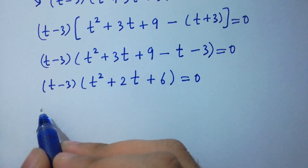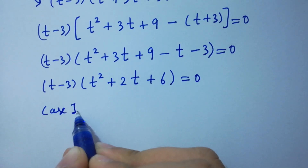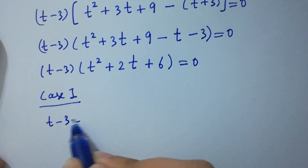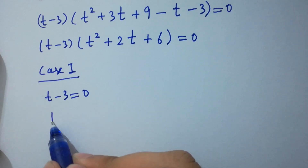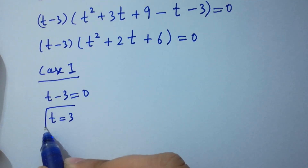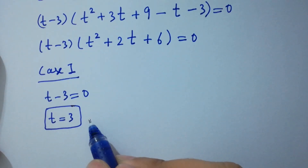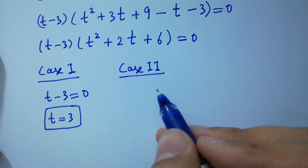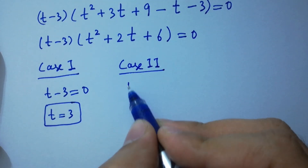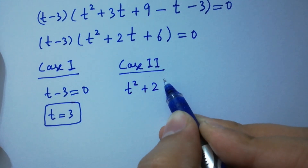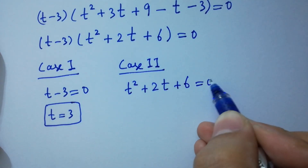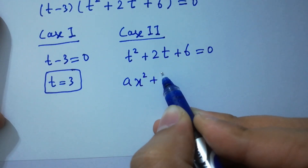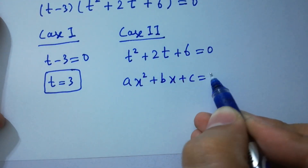Either in case one: t minus 3 equal to 0, where we get t equal to 3 — the real solution. In the second case, t squared plus 2t plus 6 equal to 0, which is a quadratic equation of the form ax squared plus bx plus c equal to 0.